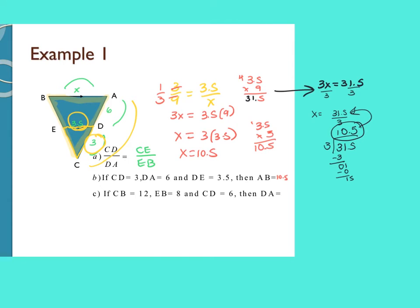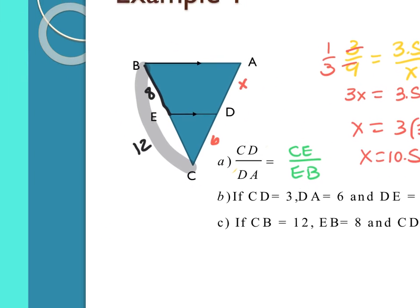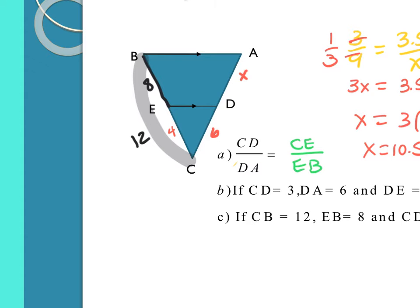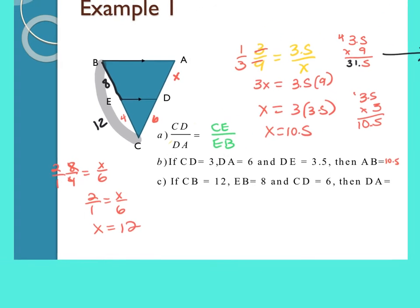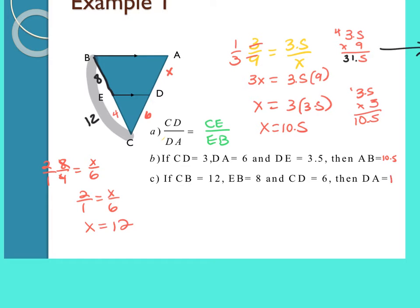All right, now C. I'm going to come back and erase off this stuff because we have new measurements. C says if CB is 12, so this whole side here is 12, and EB is 8, this is 8, and CD is 6, then DA is what I'm looking for. Good. So I need to chunk up the left side. I would do 12 minus 8 to get that this is 4. And then there's lots of different ways you could do it. Right? I could go 8 to 4, X to 6. I could do 8 to X, 4 to 6. It doesn't matter how you set it up. So if I did 8 over 4 equals X over 6, I can reduce this to 2 to 1, 2 over 1 equals X over 6, and X equals 12. So DA would be 12.